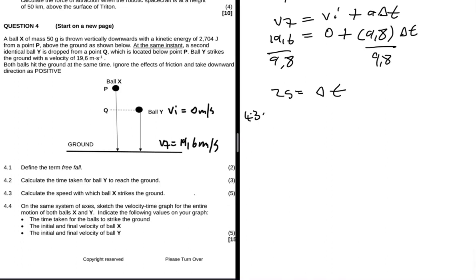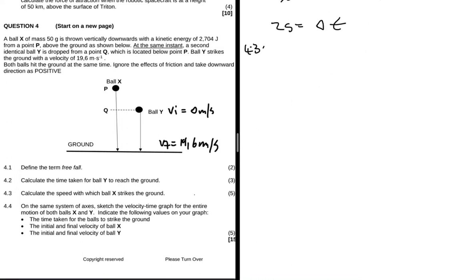Now 4.3 says calculate the speed with which ball X strikes the ground. Let's take our attention to ball X. We are asked to find vf, the speed at which it strikes the ground.